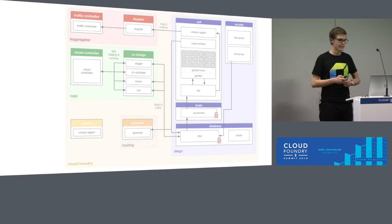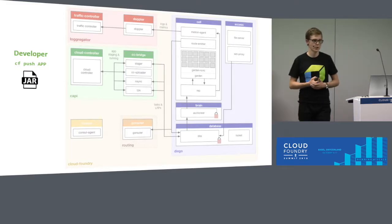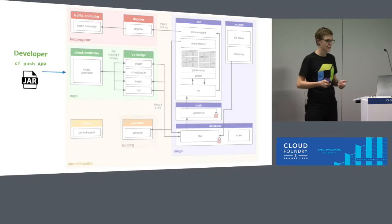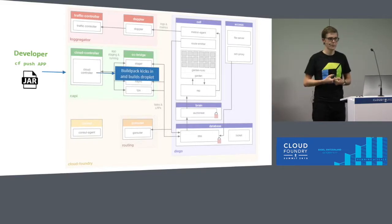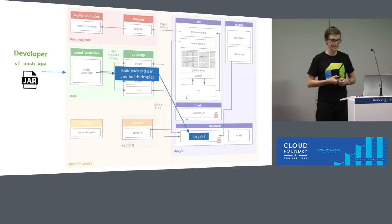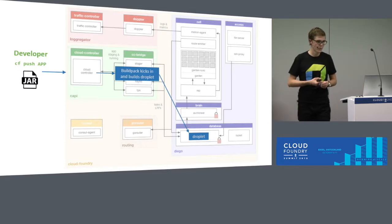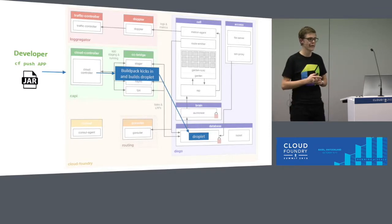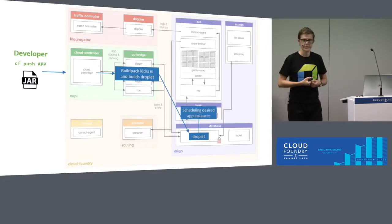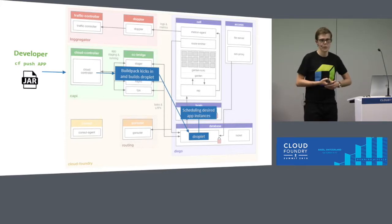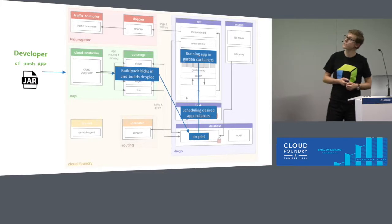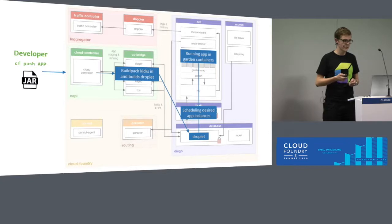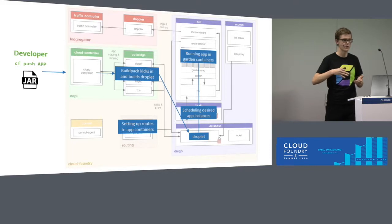The first scenario is from the viewpoint of a developer. Let's assume a person wants to push an application. The first entry point is the Cloud Controller, which receives the artifact and moves it to the Cloud Controller bridge — where buildpacks drop in and the droplet is generated. After that, the droplet is registered at the Bulletin Board System and prepared for rolling out to a Diego cell. Before that, the BBS sends an auction request to the auctioneer, which then builds a Garden container and runs it on a Diego cell. Finally, Diego registers the application on the GoRouter to make it publicly available.